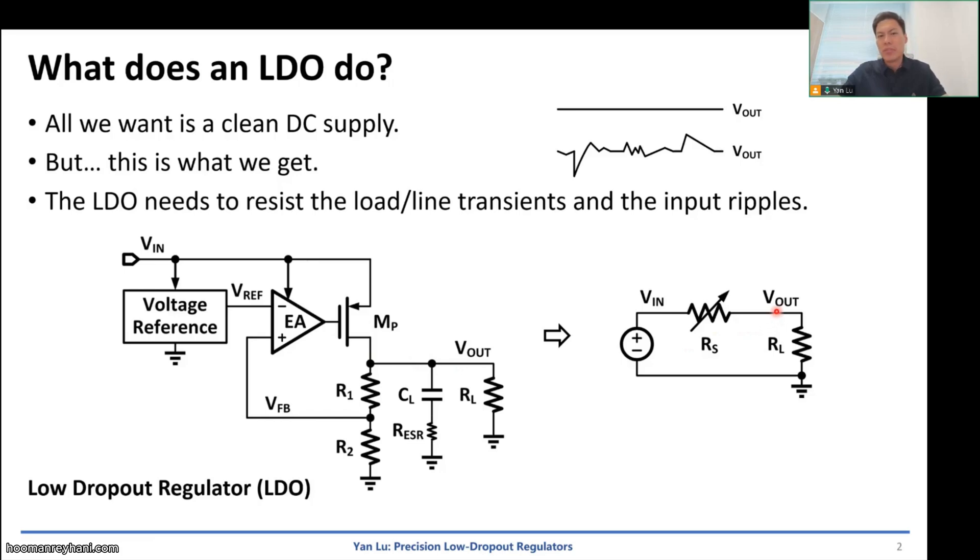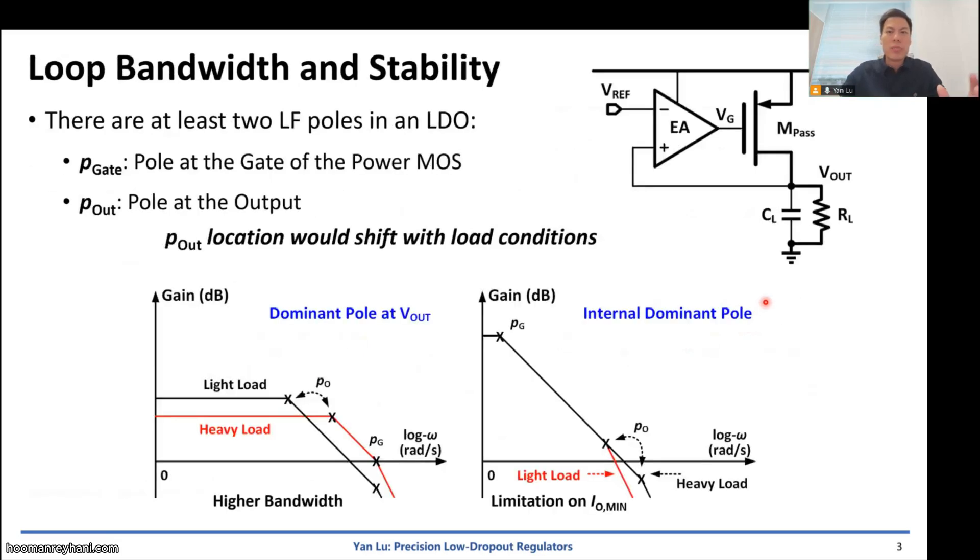So when the output drops, the efficiency will also drop because this is a linear regulator. And when we design an LDO, we need to ask where should we design the dominant pole of the feedback loop, right?